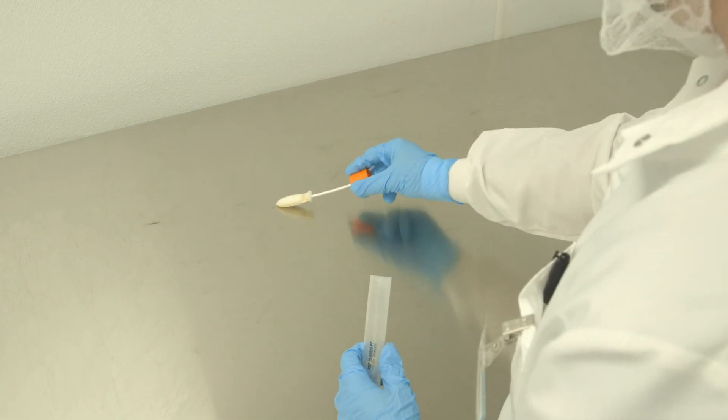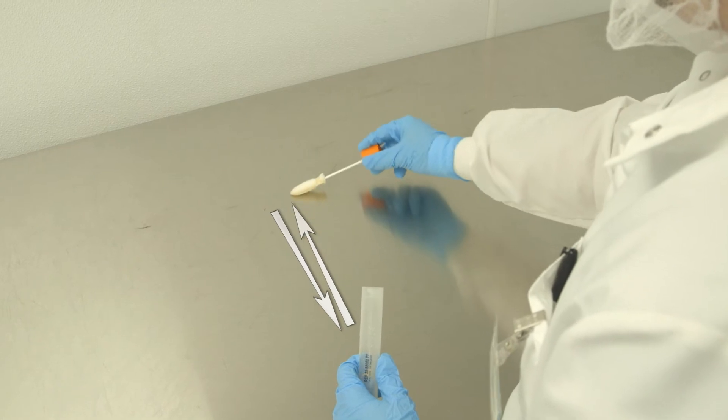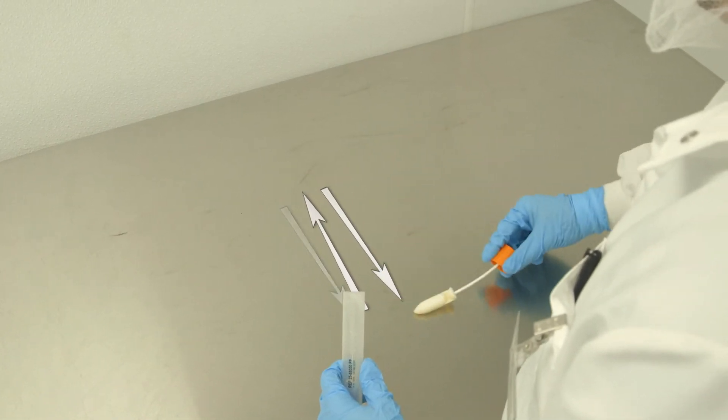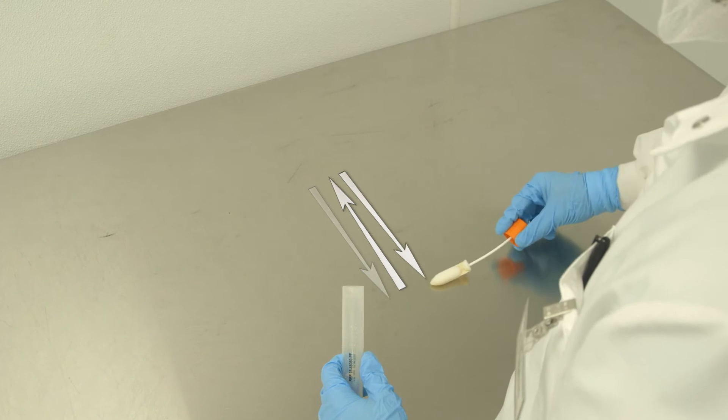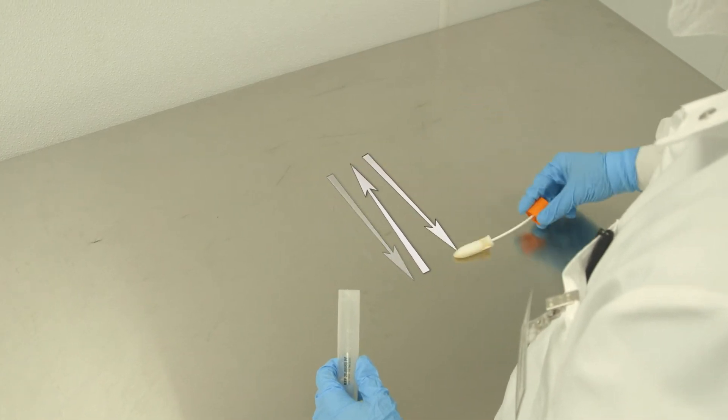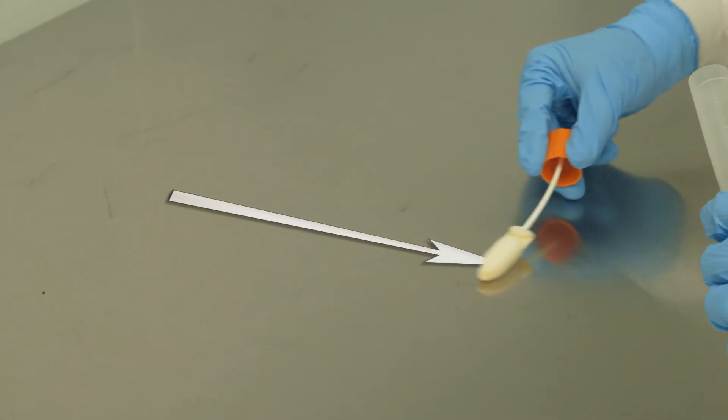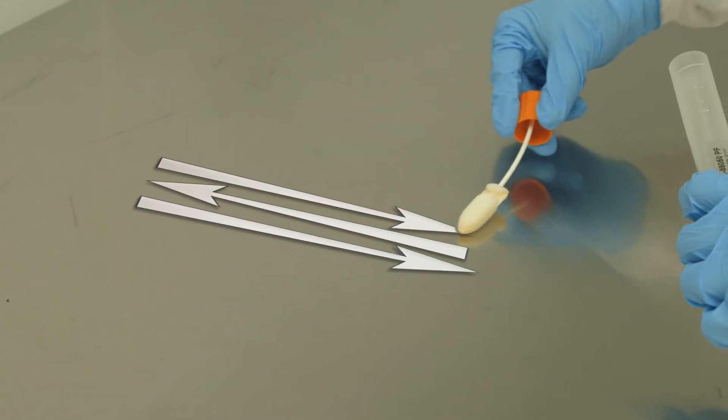Using one side of the swab, collect a sample in an area that is greater than or equal to 1 square foot by vigorously rubbing the swab with firm pressure approximately 10 times in a vertical up and down motion following a Z pattern.